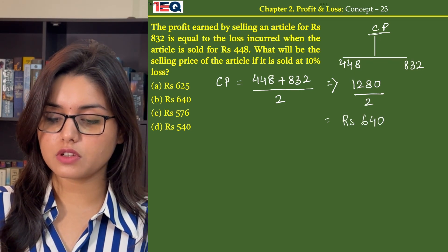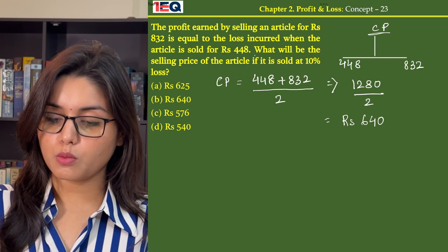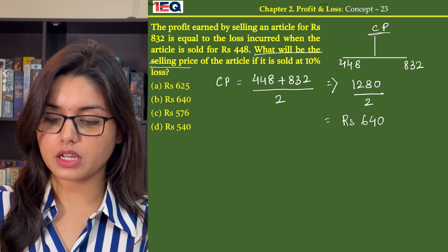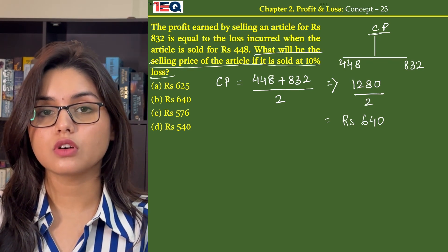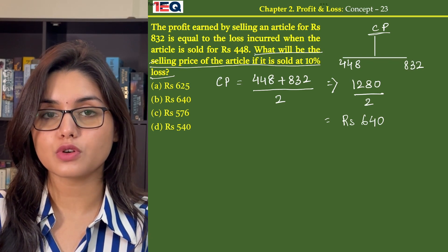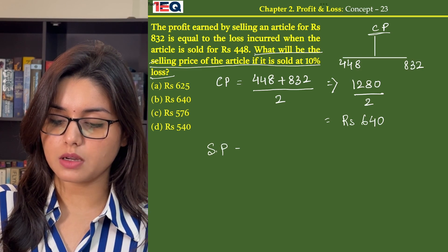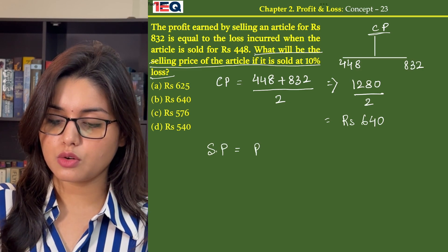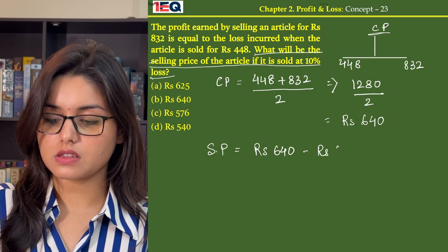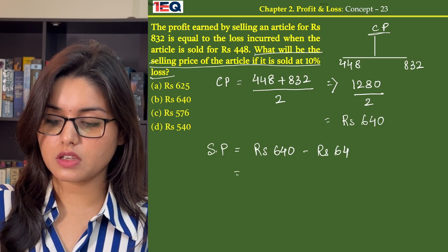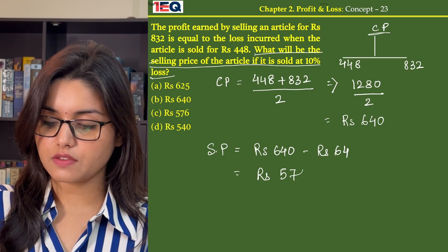Now in the later part of the question, it is asked: what will be the selling price of the article if it is sold at 10% loss? So 10% loss on Rs. 640 is Rs. 64. Therefore, the selling price becomes Rs. 640 minus Rs. 64, which gives us Rs. 576.